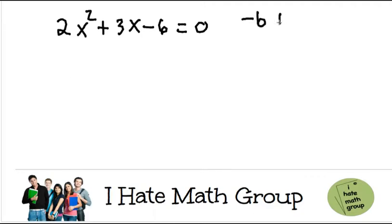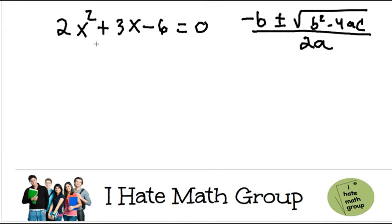So the quadratic formula is negative b plus and minus the square root of b squared minus 4ac all over 2a.